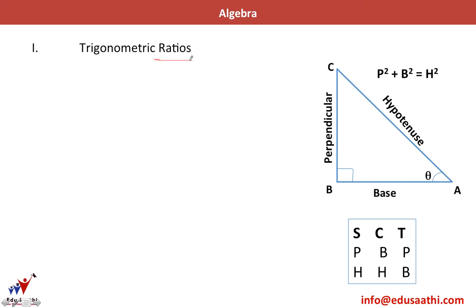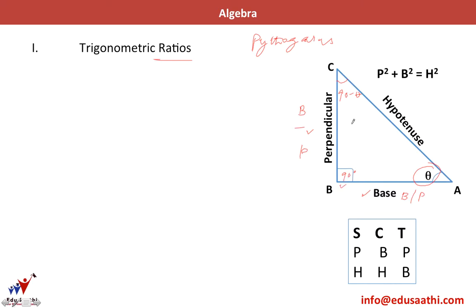The first thing we do is discuss trigonometric ratios, starting with the Pythagoras formula. In a right-angled triangle, the two sides which contain the 90-degree angle are called the perpendicular and the base. The side opposite to the 90-degree angle is called the hypotenuse, denoted by H. The Pythagoras theorem states that perpendicular squared plus base squared equals hypotenuse squared.